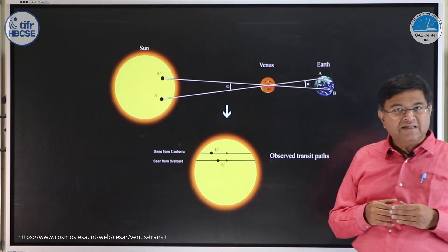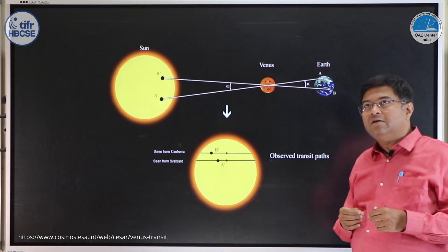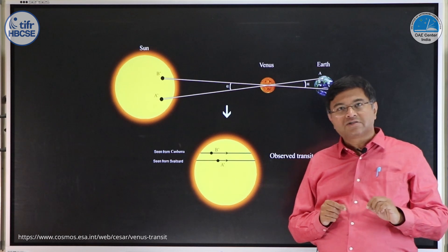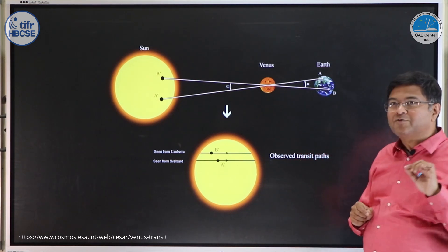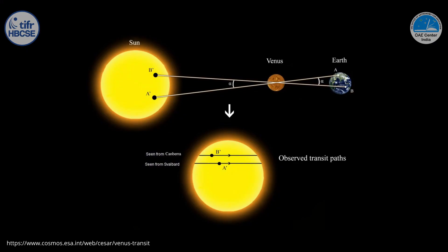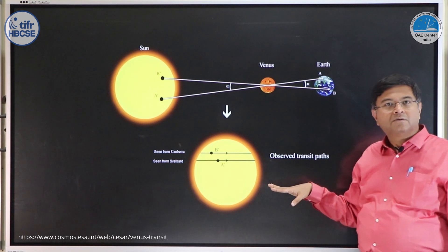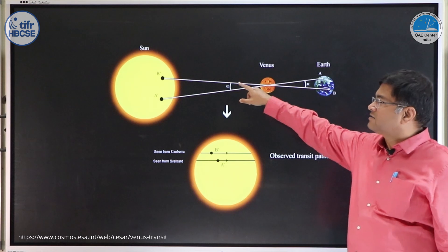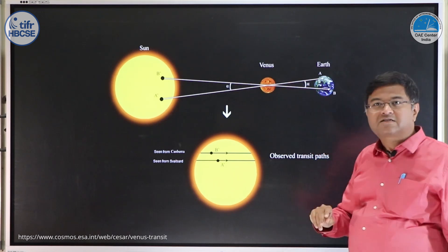During the Venus transit of the 19th century, people actually measured the path of Venus as seen from two different latitudes along almost the same longitude, and that was used to find distances. A cartoon shows that if you take two locations A and B on surface of Earth, for them Venus may appear to trace the path A prime and B prime. This difference is used to measure this angle and hence the distance to Venus.